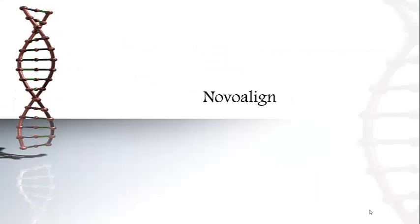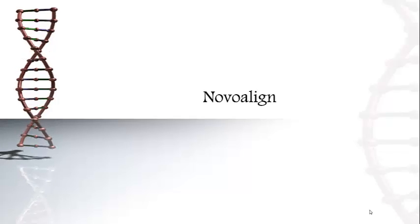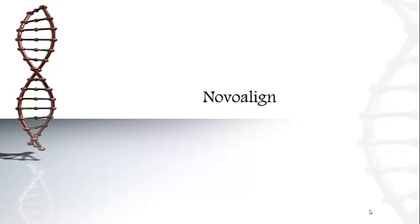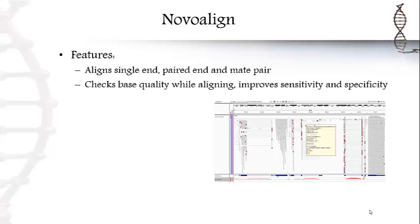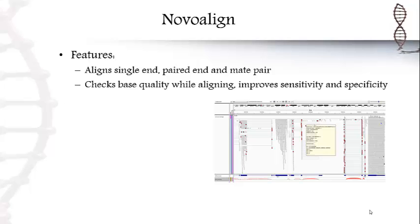The next tool we're going to look at is NovoAlign. What NovoAlign does is that it aligns single-end, paired-end, and mid-pairs. It also checks for base quality and improves sensitivity and specificity of areas of interest.